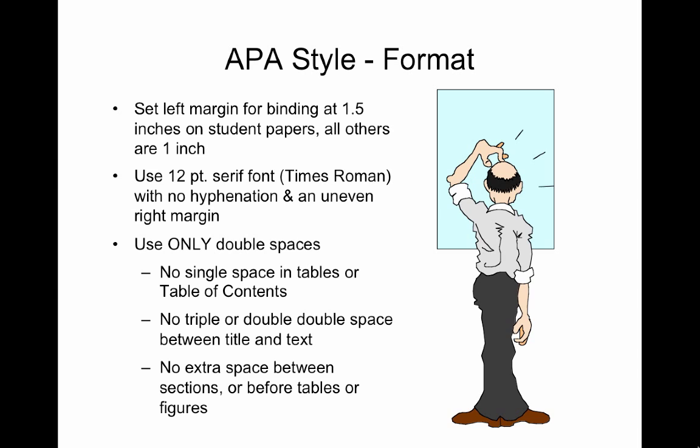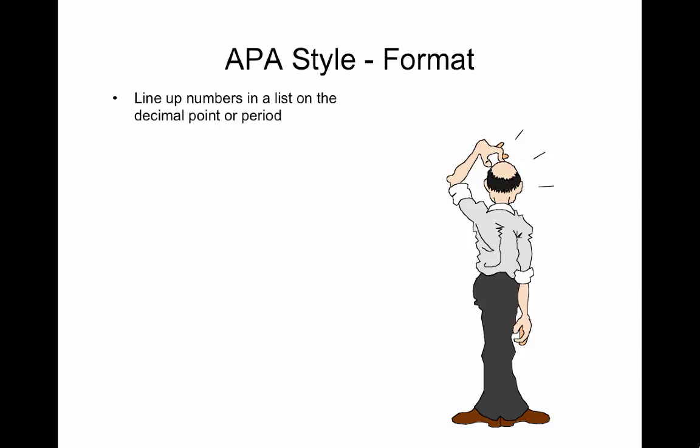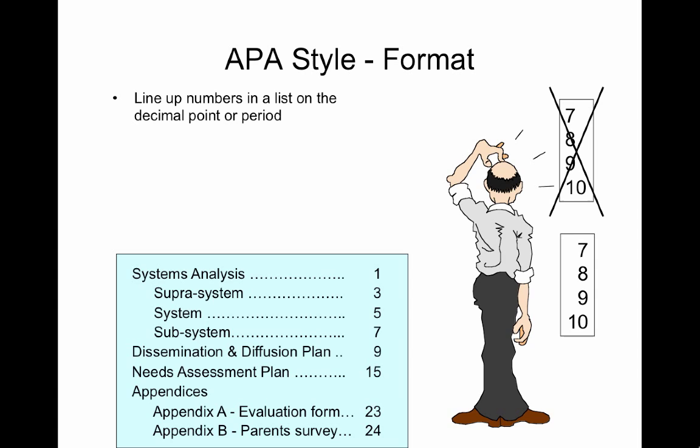Line up numbers in a list on a decimal point or a period. See how sloppy this looks? You want to avoid that. This is much nicer. Look at how this table of contents lines up nicely on the left. If you use a decimal tab, you don't actually have to use the decimal, but it lines them up straight. You can also use a right tab after the dots in a table of contents.